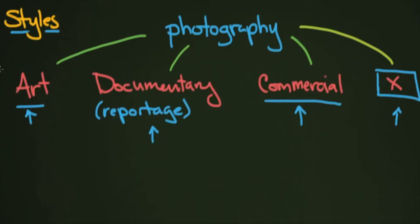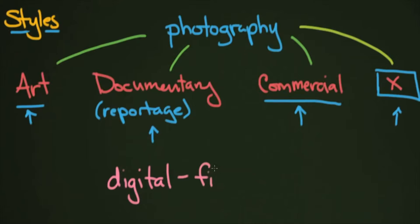You can do all of these different styles of photography in a couple of different ways these days. In the modern world, everybody knows we have digital photography, which is how most of us are taking photographs. But that's actually not that old — when I was a kid, you didn't have digital cameras; you had film cameras, and that's how photography was performed for a long time. You also have video, which some people are surprised to hear is photography — it's just photography moving at about 24 pictures per second.